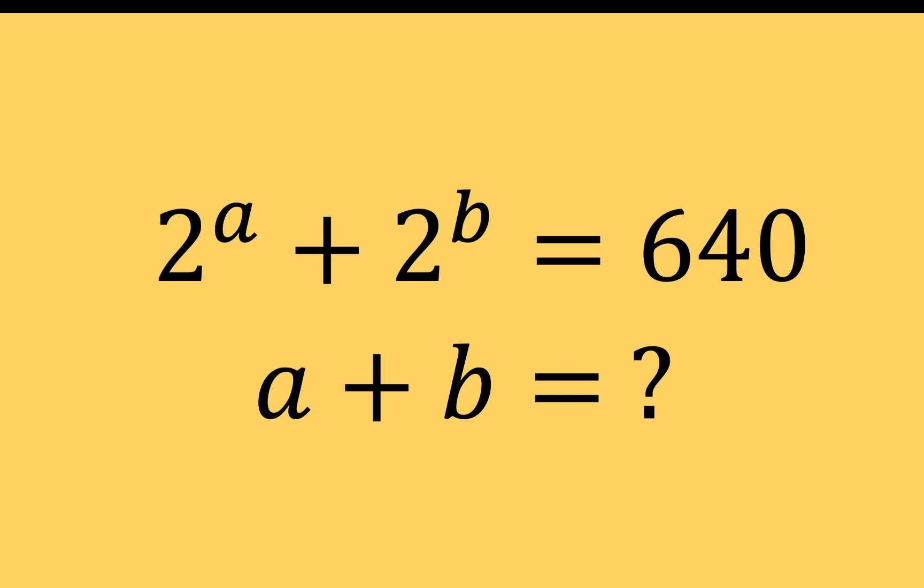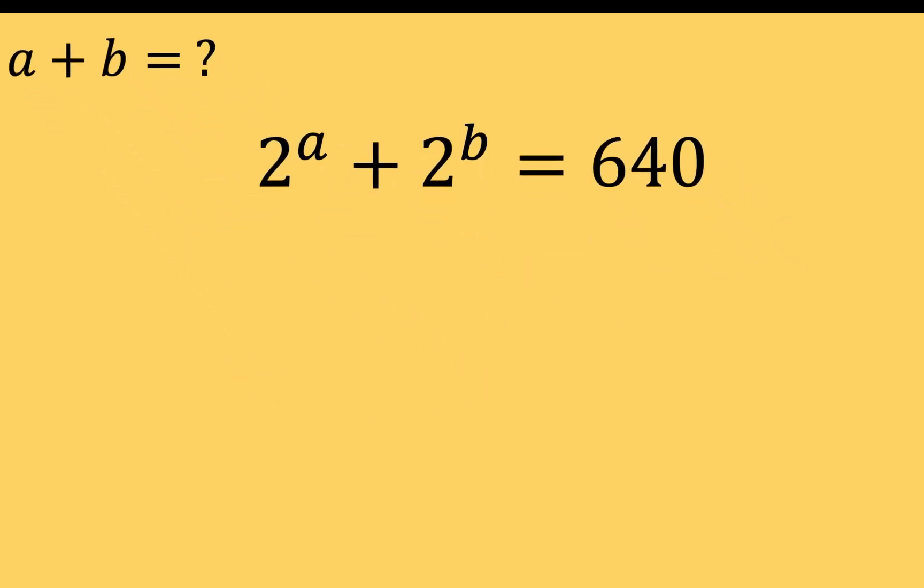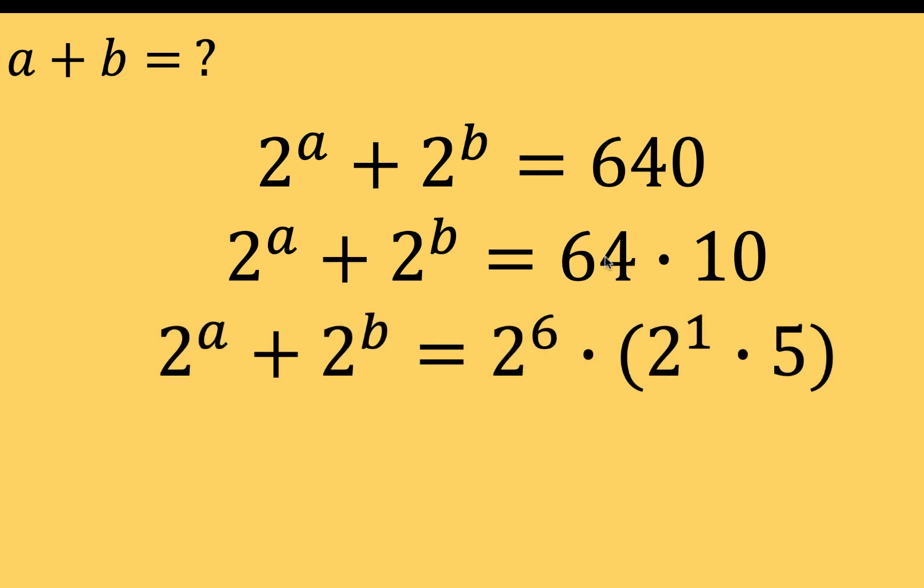Now let's solve this problem together. Let's begin by rewriting 640 as a product of exponential numbers. We can note that 640 equals 64 times 10. Now 64 is a power of 2, that is 2 raised to the sixth. And this 10 can also be written as 2 times 5.